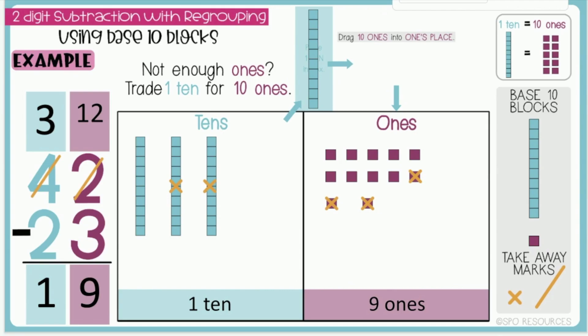To check my answer, I will look at my place value pieces and make sure they match up with my answer. In the tens place, I have one 10, and in the ones place, I have nine ones, and that is shown with the number 19.